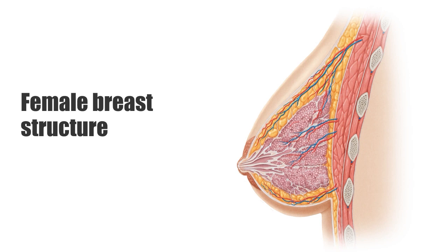The breasts are a secondary sex characteristic of females but are also present in a rudimentary or underdeveloped form in males. The breasts are the most prominent superficial structures in the anterior thoracic wall, especially in women.